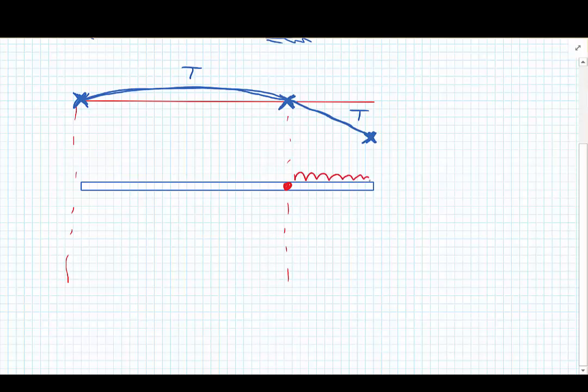And if we have a UDL pointing downwards on the right hand side of the point we're taking moments, then it's going to want to move the beam upwards at the left hand edge. So if the beam wants to move upwards at the left hand edge, we can conclude from that that our reaction force must point downwards.